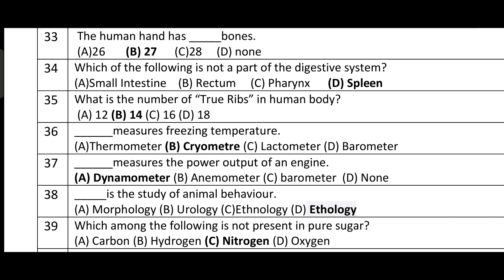Question number thirty-nine: which among the following is not present in pure sugar? Nitrogen is not present in pure sugar. Oxygen, hydrogen, and carbon are all present in pure sugar, but nitrogen is not.